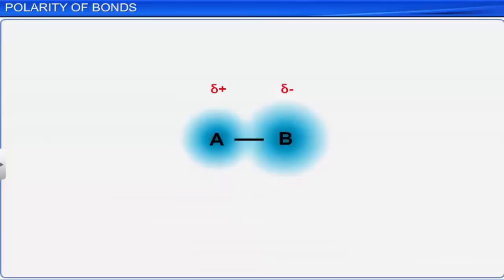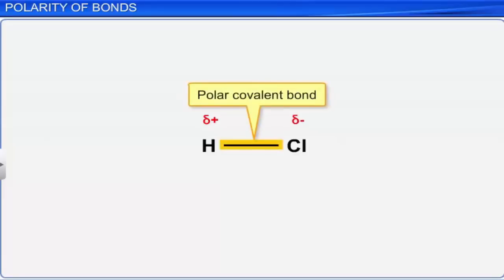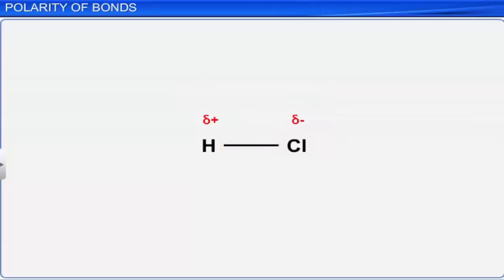The covalent molecule with the two oppositely charged poles is called a dipole. For example, the dipole in hydrogen chloride is represented as shown here. Hence, the bond is called a polar covalent bond, and the molecule is called a polar covalent molecule.